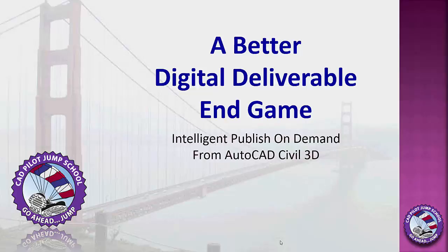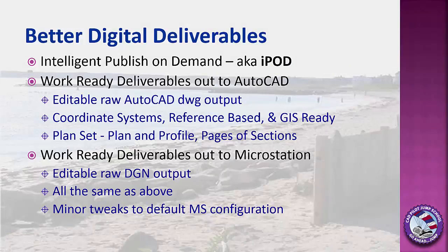This video is about a better way to deliver digital deliverables in AutoCAD Civil 3D. We call that Intelligent Publish on Demand. First, we're going to take a quick look at the results of what that means. We'll hop briefly into AutoCAD and take a look at pure AutoCAD output — editable and usable inside AutoCAD with coordinate systems. It employs X-reference technology, which most AutoCAD users are completely ready for. It's effectively GIS-ready deliverables.